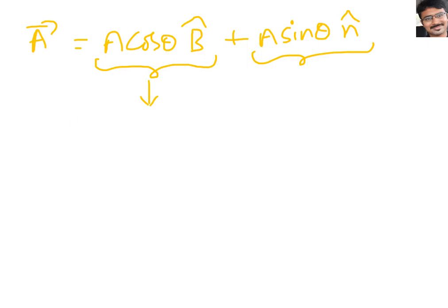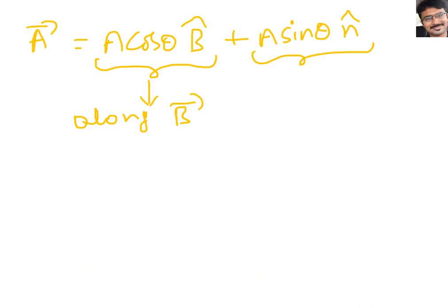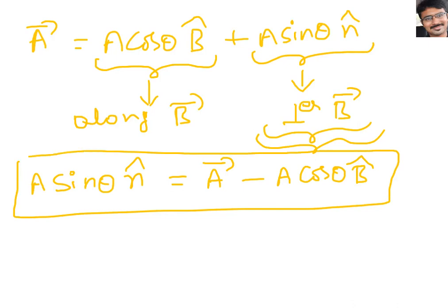A cos theta direction is along B bar direction. And A sin theta is perpendicular to B bar. So A sin theta · N cap is the component perpendicular to B bar — that is our target. They are asking for this one. So what should I write? A sin theta · N cap = A bar minus A cos theta · B cap. This is the formula.